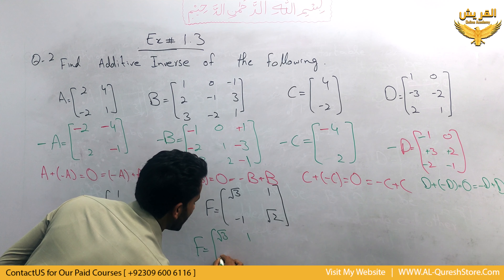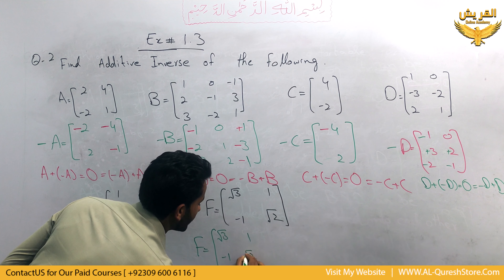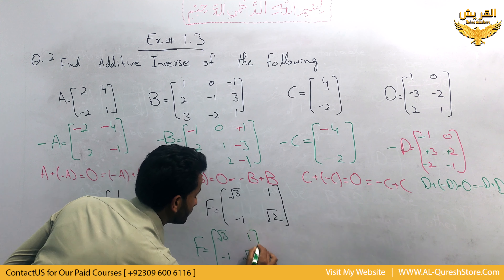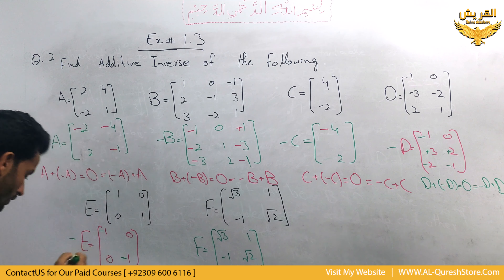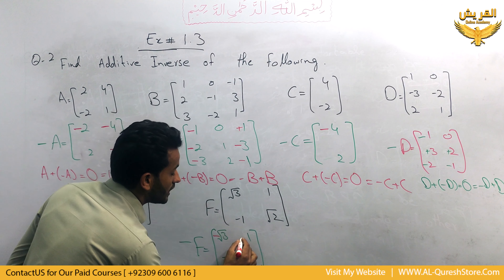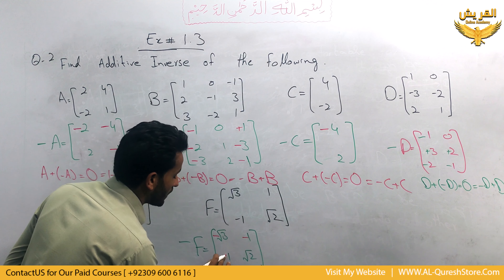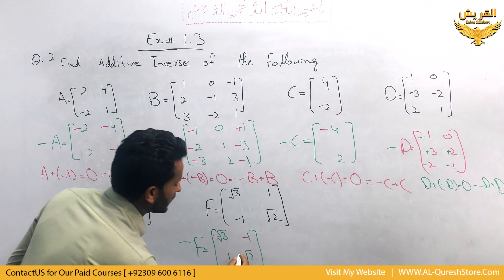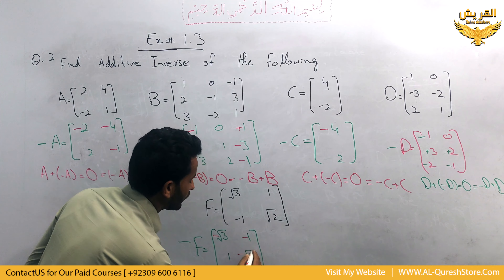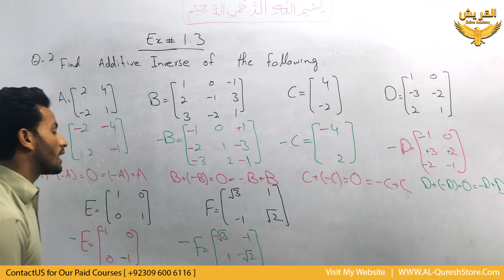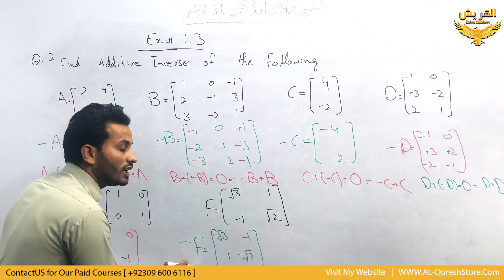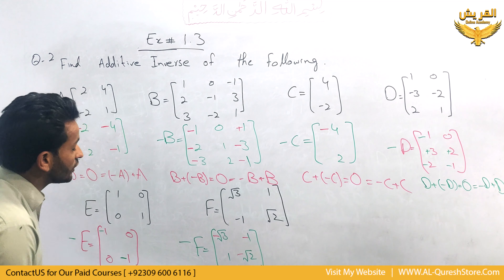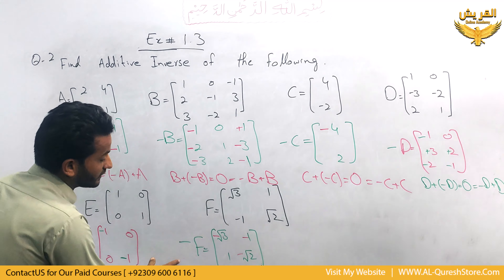For matrix f, f equals square root of 3, 1, minus 1, and square root of 2. So the additive inverse minus f has signs changed: minus square root of 3, minus 1, plus 1, and minus square root of 2. This becomes the additive inverse of matrix f, which is equal to minus f.